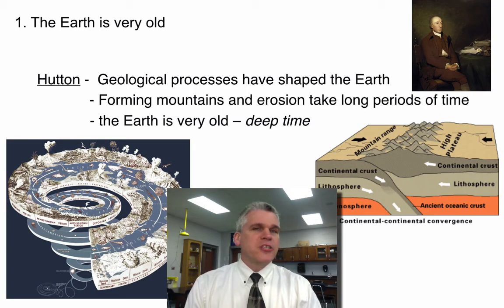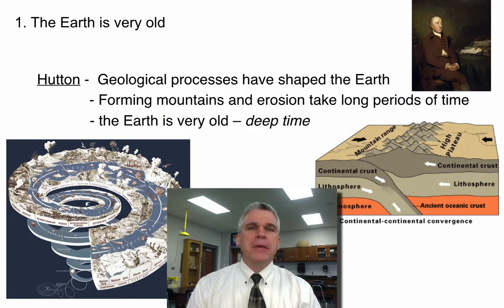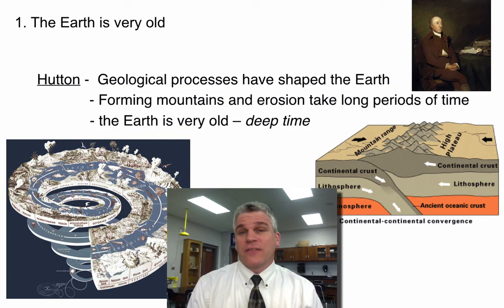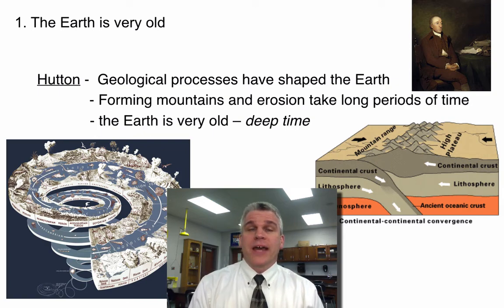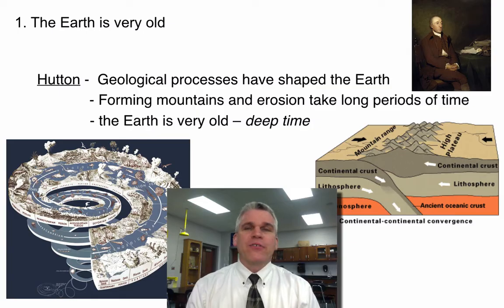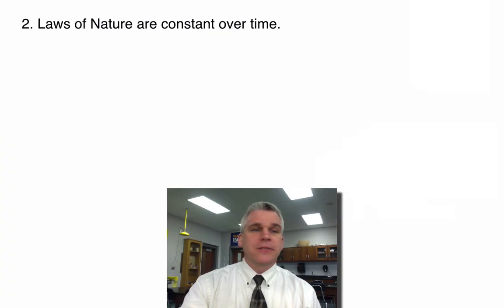We don't measure this in thousands of years — we could be looking at billions of years old. Because if the Earth was only 6,000 years old, natural selection and evolution wouldn't be able to happen in such a short period of time. However, if the Earth is really 4.5 billion years old, then there's time for something like evolution to take place.